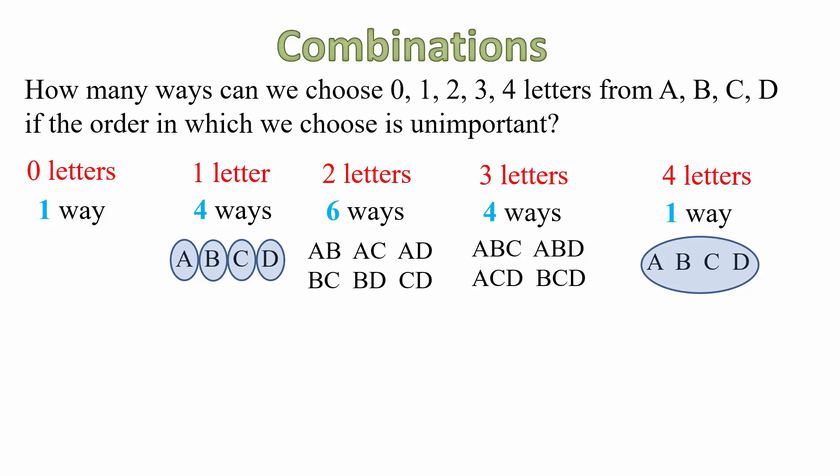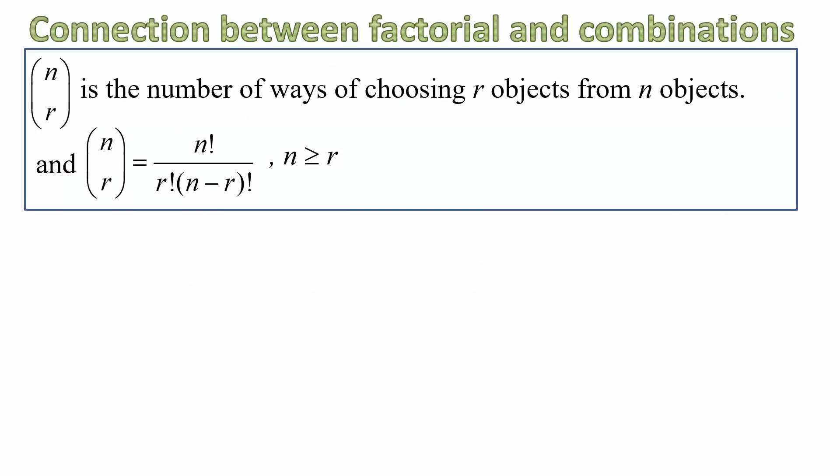Notice the symmetry in the answers, 1, 4, 6, 4, 1. Does it remind you of anything relating to Pascal's triangle? There it is. The fifth row of Pascal's triangle is identical to our solution, isn't it? For the number of ways of choosing up to four letters. So what can we conclude from that?